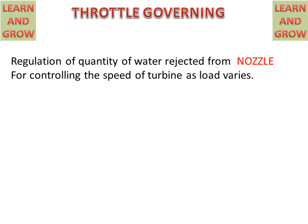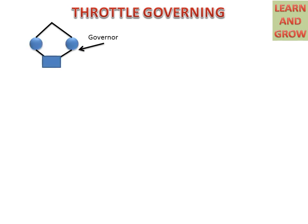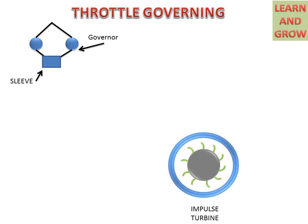Today we will discuss the Throttle Governing process. Firstly, we will discuss the parts of the Throttle Governing process. We have a governor with fly balls and a sleeve, and an impulse turbine for which the Throttle Governing process will be carried out.